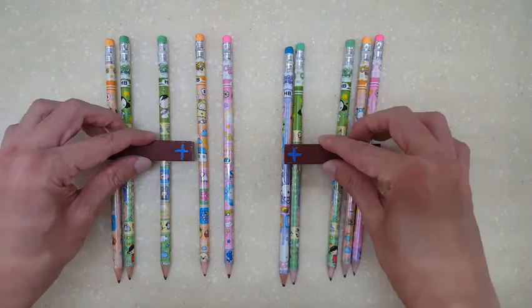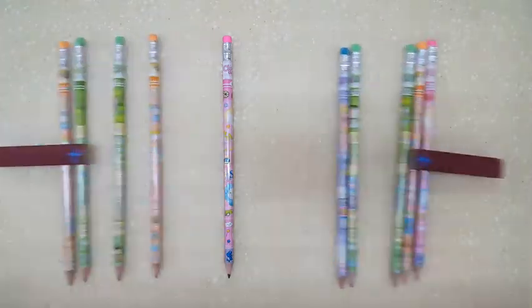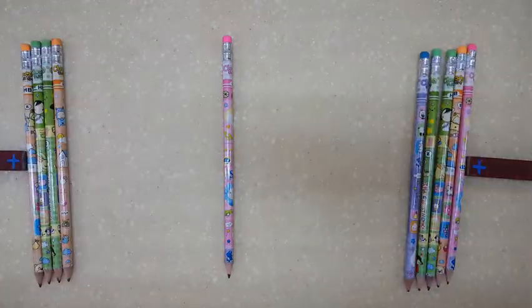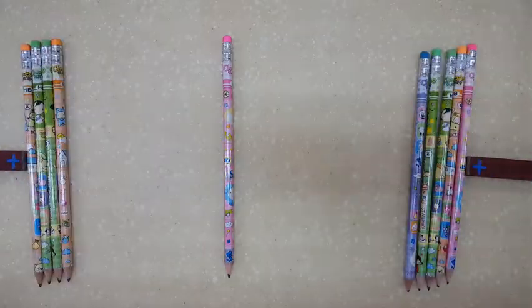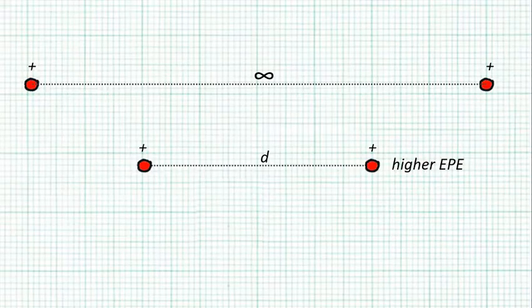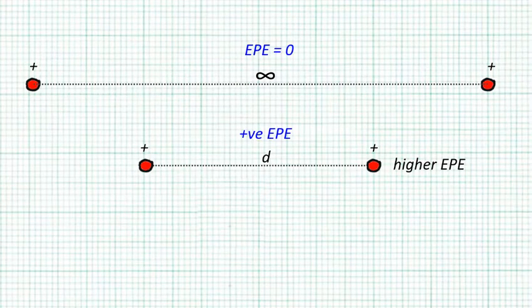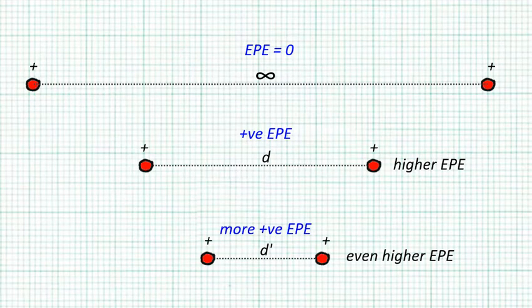For two like charges, because they repel each other, we store EPE by pushing them closer together. So closer together is higher EPE than infinitely apart. But infinitely apart is zero EPE, so closer together must be positive EPE. The closer they are, the more positive.